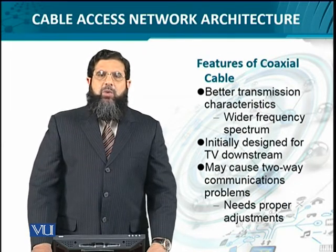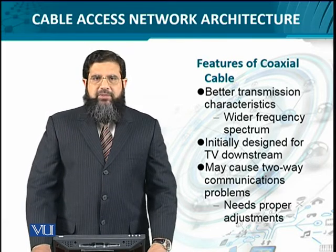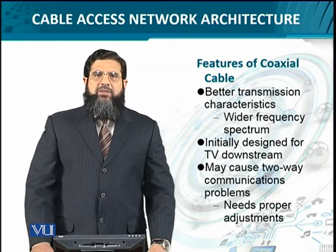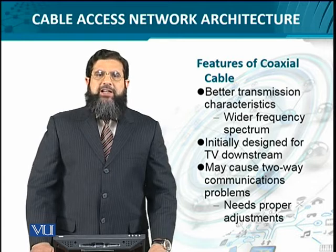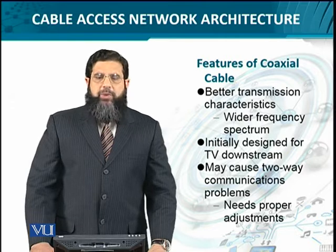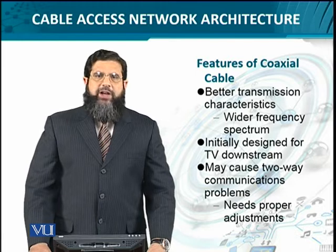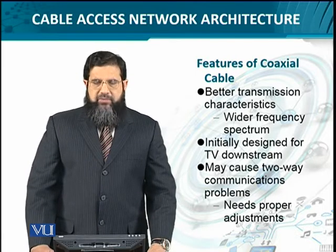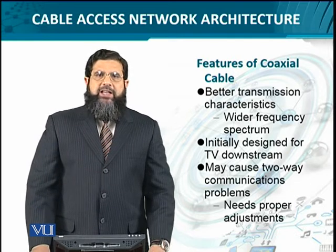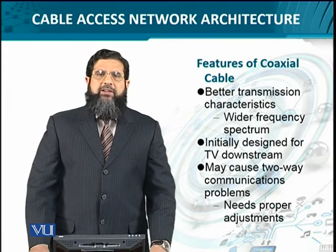The coaxial cable, when compared as a medium with the unshielded twisted pair, is much better in transmission characteristics. Number one, it is better shielded in terms of noise. It has a thicker copper core. Consequently, it results in better frequency spectrum availability. Coaxial cable provides a wider frequency band. Since it was initially meant for television, and television needs the 6 MHz spectrum, it was good enough to provide the downstream TV services.